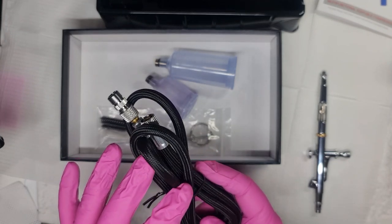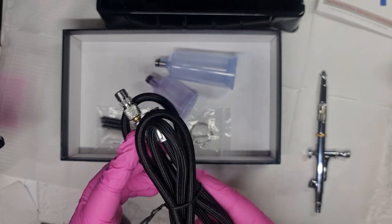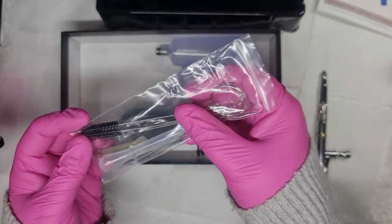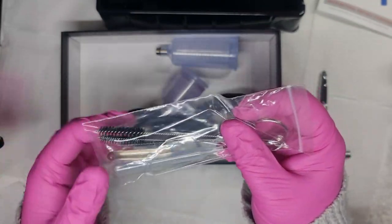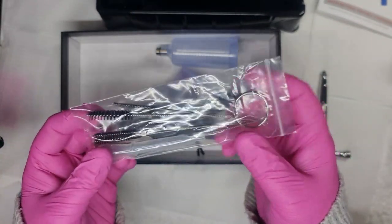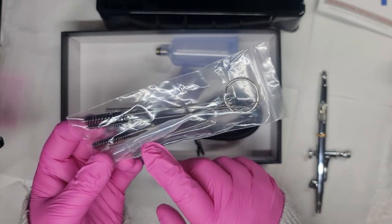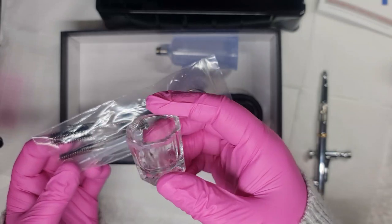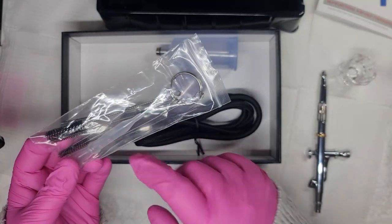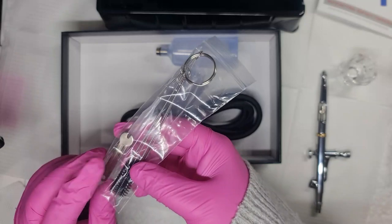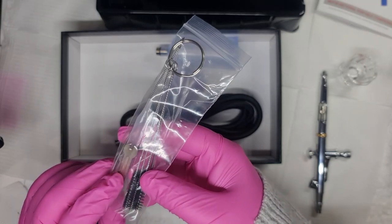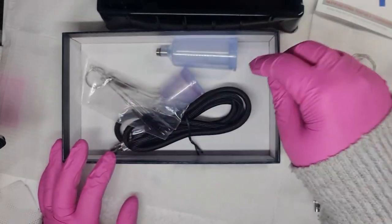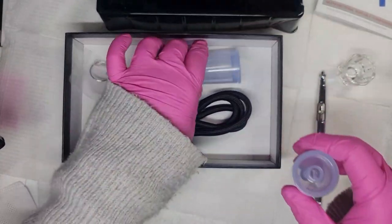It also comes with your cleaning spoolie things, your dropper. If you were mixing up in one of these little pots and you only wanted a certain amount, you could do that. And it also comes with the tiny spanner which is for cleaning purposes.